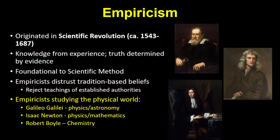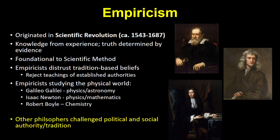Scientists like Galileo, Isaac Newton, and Robert Boyle used empiricism to understand the physical world. They challenged the teachings of ancient Greeks and the Catholic Church about the nature of the universe. Many philosophers expanded this empirical approach to question established authority and tradition in the political and social realms.